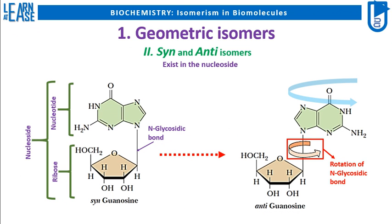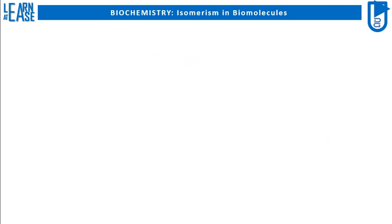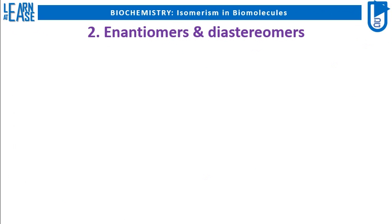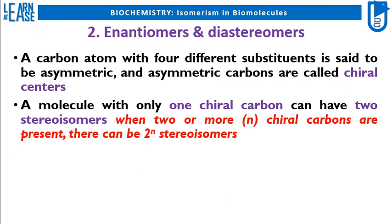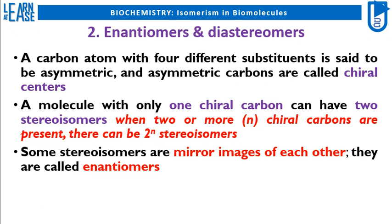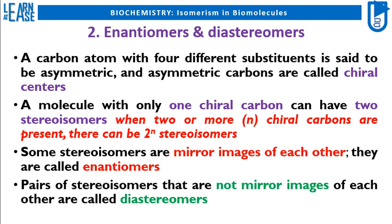The second subtype of configurational isomers is enantiomers and diastereomers. A carbon atom with four different substituents is said to be asymmetric, and asymmetric carbons are called chiral centers. A molecule with only one chiral carbon can have two stereoisomers; when two or more chiral carbons are present, there can be 2^N stereoisomers, where N is the number of chiral carbons. Some stereoisomers are mirror images of each other — they are called enantiomers. Pairs of stereoisomers that are not mirror images of each other are called diastereomers.